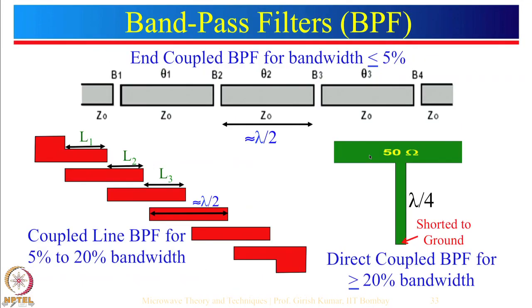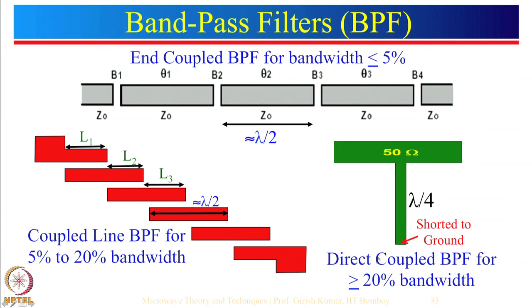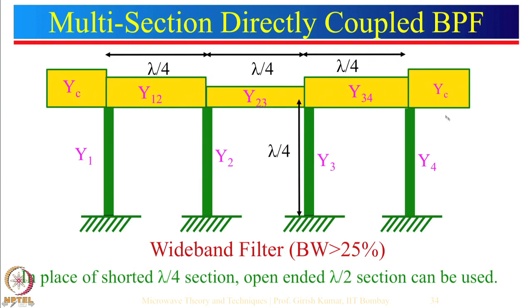We then shifted to using microstrip lines to realize band pass filters. We talked about end-coupled filters where coupling is done at the end of the resonator — this is good for bandwidth less than 5% because coupling is relatively weak. By using coupled lines we can increase coupling between resonators and increase bandwidth from 5% up to about 20%. For larger bandwidth, direct coupled band pass filters are used. A short at the end of a λ/4 length acts as an open circuit, so input signal goes to the output.